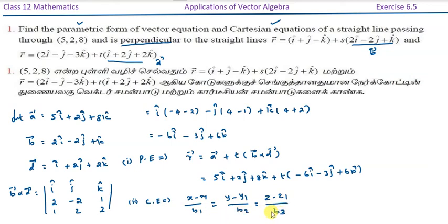If you want to write b1, b2, b3, then we will write b cross d. So we can write x minus 5 divided by minus 6 is equal to y minus 2 divided by minus 3 is equal to z minus 8 divided by 6. This is the required Cartesian equation.